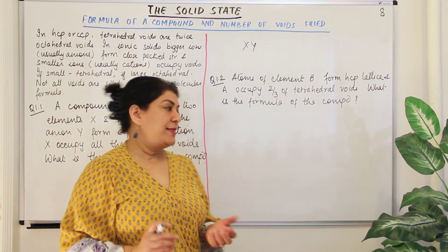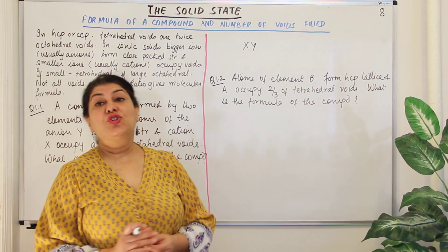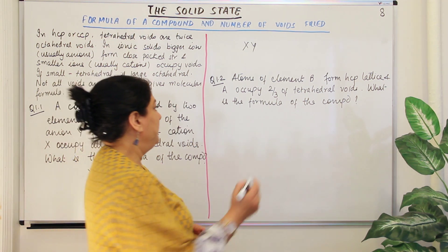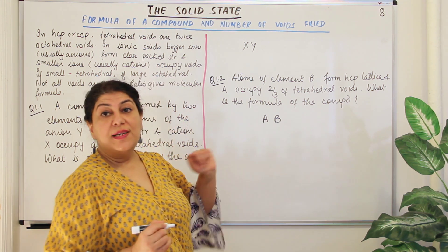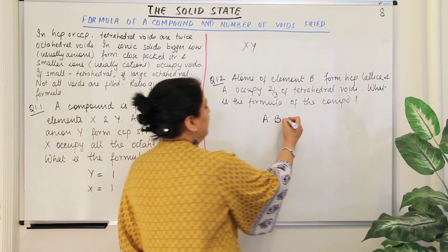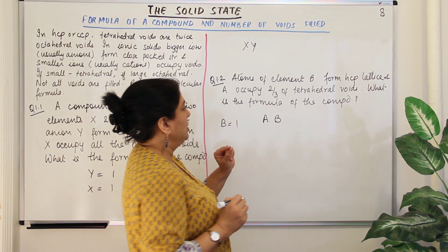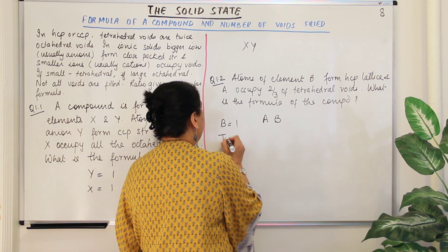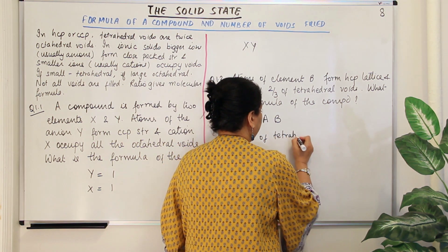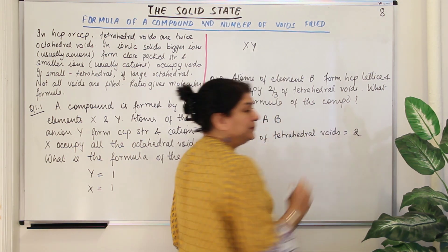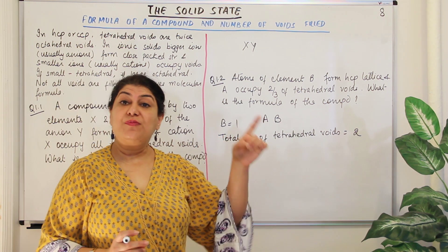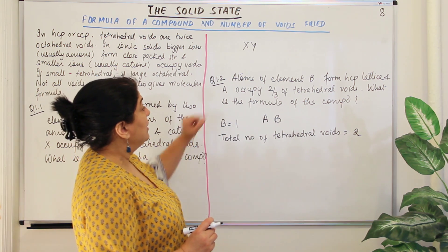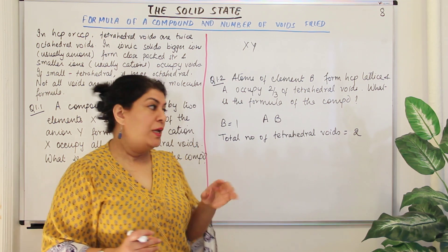The next question: atoms of element B form an HCP lattice, and A occupies two-thirds of the tetrahedral voids. B forms the HCP lattice, so let B = 1. The total number of tetrahedral voids is twice the number of atoms, so tetrahedral voids = 2. A occupies two-thirds of those tetrahedral voids.